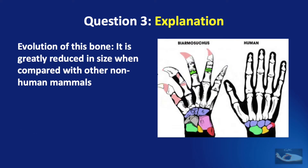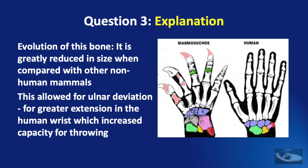An interesting point about the evolution of this bone is that it is greatly reduced in size when compared with other non-human mammals. As you can see in the picture, the red coloring shows the pisiform bone in earlier mammals compared to its size in humans. This reduction in the size of the pisiform allowed for more ulnar deviation and greater ulnar extension in the human wrist, which increased the capacity for throwing.